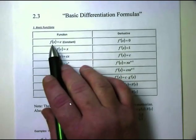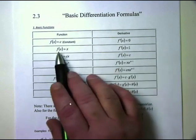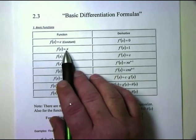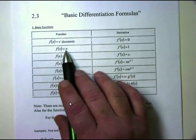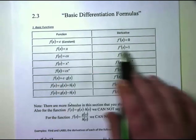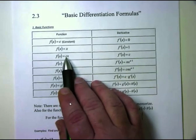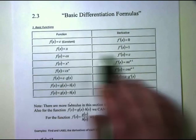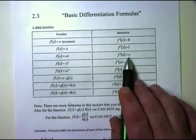If f(x) is equal to a constant, the derivative of a constant is zero. If f(x) equals x, the derivative of x is one. Remember, the derivative is the slope of the tangent line — if I've got y = mx + b, the slope is always the coefficient in front of x, which is one. And if I have f(x) equals c times x, the derivative of c times x is just c, because that's the slope.